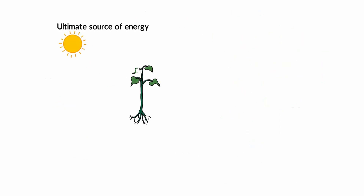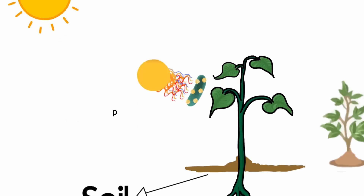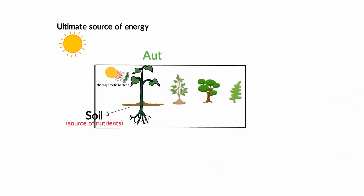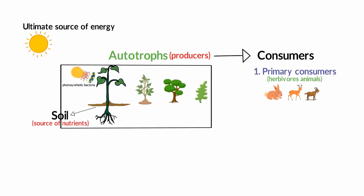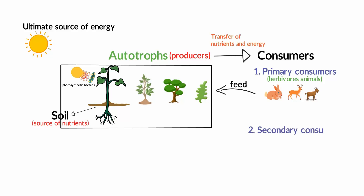Now, if you can recollect the ecological pyramid, we have read that plants, trees, and algae are called producers. Herbivorous animals feed on these producers for food and energy. When an animal consumes plants, the carbon compounds from the plant enter into the animal.